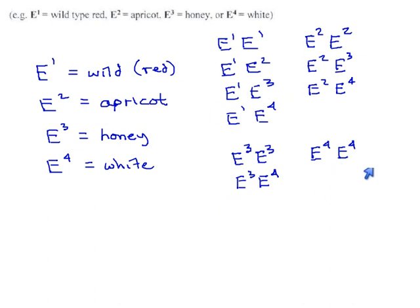So it can be kind of a drag writing all these out, and you may not necessarily have to. You can usually figure them out on the fly just by looking at the more dominant allele and saying, okay, these are all wild-type. This is all wild-type, and then something else that gets overridden by wild-type. These are all going to be apricot. These are all going to be honey. And this is the only way that you get white.